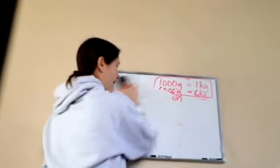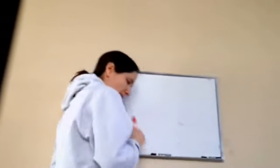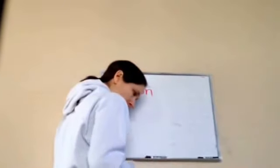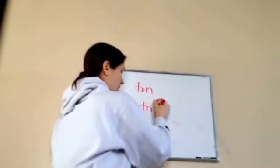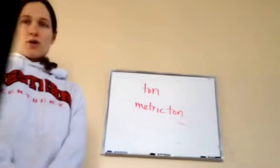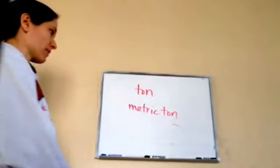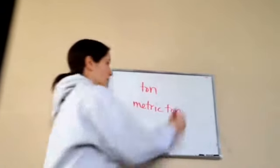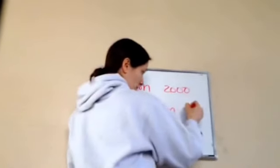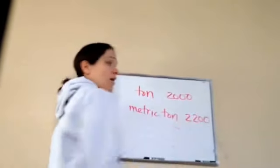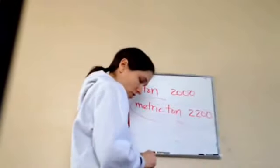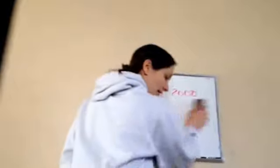Now this is a little bit different. It says: which is heavier, a car that weighs a ton or a car that weighs a metric ton? Look at your notes. A U.S. ton weighs 2,000 pounds. A metric ton weighs 2,200 pounds. So which one is heavier? The metric ton — by 200 pounds, which is a little bit of a difference. All right, that is lesson 77.